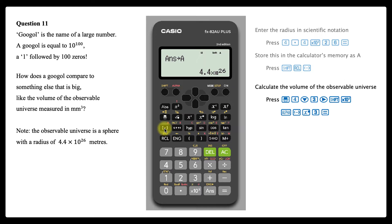Now calculate the volume of the observable universe as a sphere, calling up the radius that was stored in the memory as A by pressing alpha then the negative key as required.